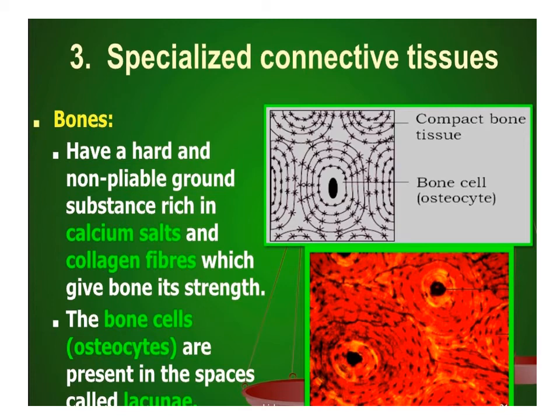Bones have a hard and non-pliable ground substance or matrix. It is rich in calcium salts and collagen fibers which provide strength to the bones. The osteocytes are bone cells present in spaces called lacunae in the matrix. Bones provide structural framework to the body and protect softer tissues and organs.